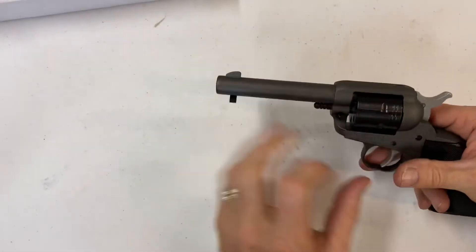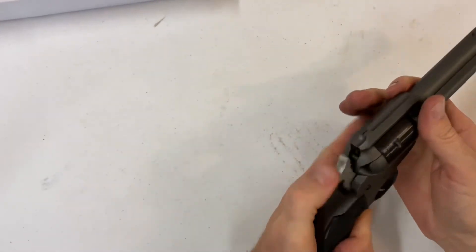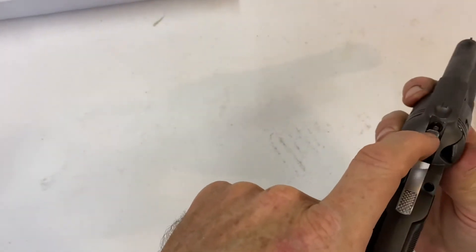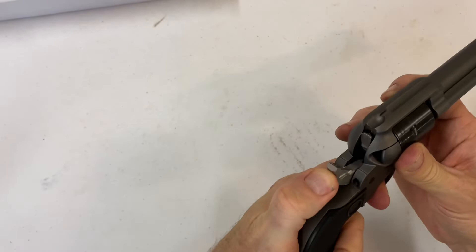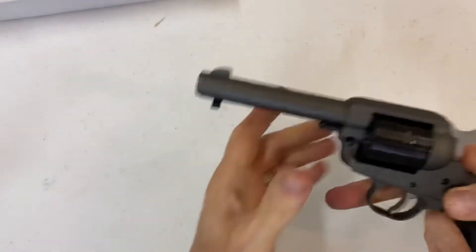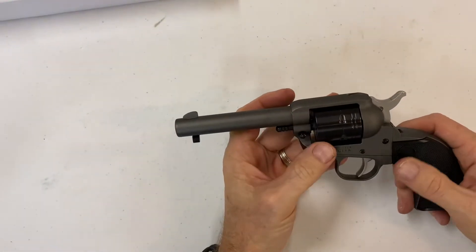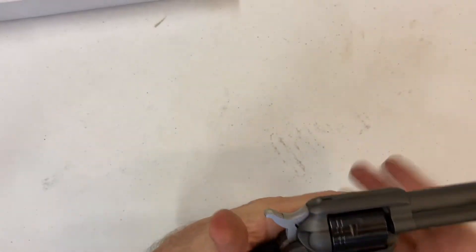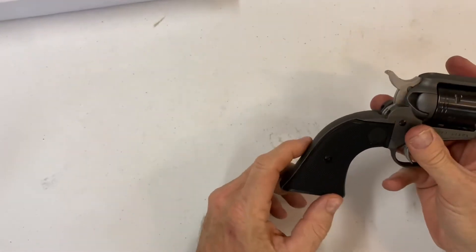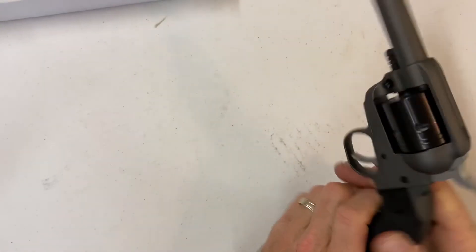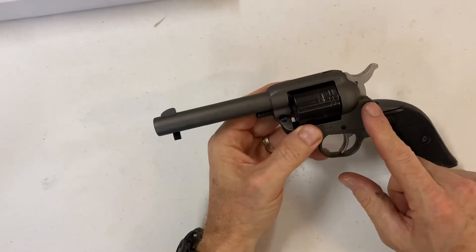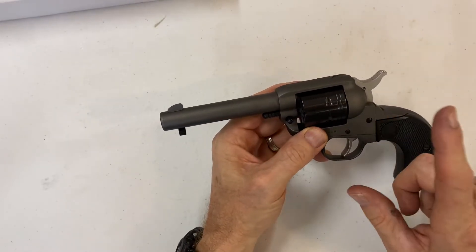As far as safeties, there's no external safeties on this thing. It does have a bar here that blocks the trigger. This is Cerakote finished. It's got plastic grips here.